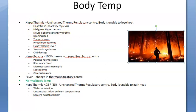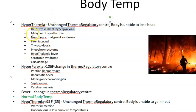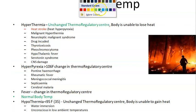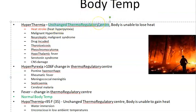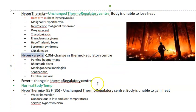Heat stroke comes under hyperthermia. In hyperthermia, your body's controlling mechanism is not changed — the body itself is not increasing its temperature. It is not caused by internal regulation centers; it happens because of something external. Hyperpyrexia, on the other hand, is extreme fever caused by a change in the thermoregulatory center.